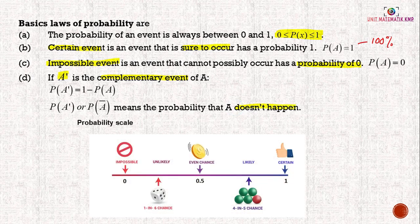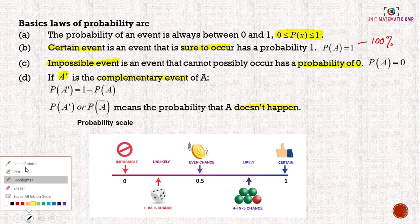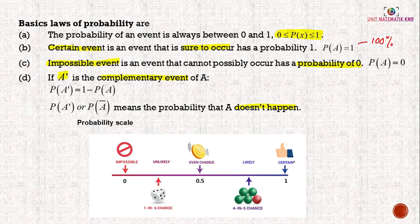Looking at the probability scale: probability ranges between 0 and 1. At 0 is an impossible event; at 1 it is certain to happen. In the middle is an even chance — 50/50. 'Unlikely' means the probability is closer to 0, for example rolling a die and getting 1 has probability 1/6, which is between 0 and 0.5. 'Likely' means the probability is closer to 1 — for example, having 4 green marbles out of 5 gives a 4/5 chance.